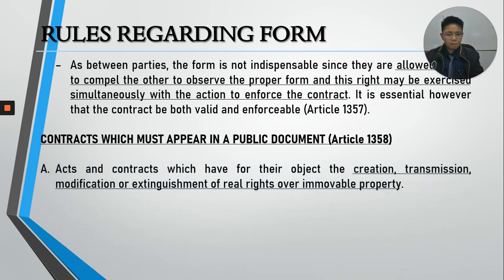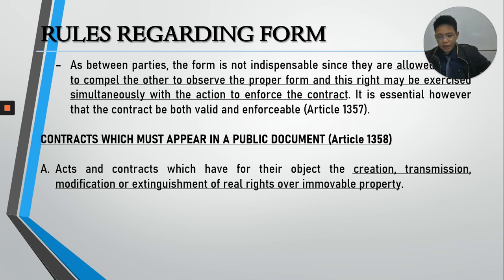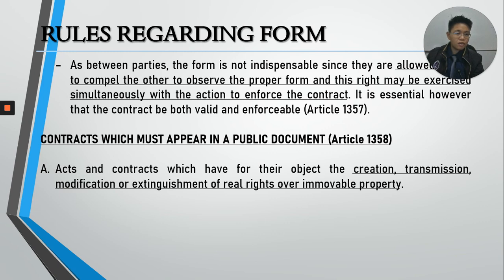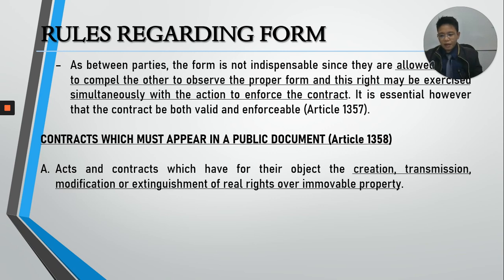Article 1358 covers contracts which must appear in a public document for convenience. Articles 1357 and 1358 are connected. The contracts enumerated in Article 1358 are valid and enforceable even if not contained in a public instrument or even in writing — the public instrument is required only for convenience, for registration, or for greater protection of the parties. Once registered, the contract is binding against third persons — binding against the entire world.